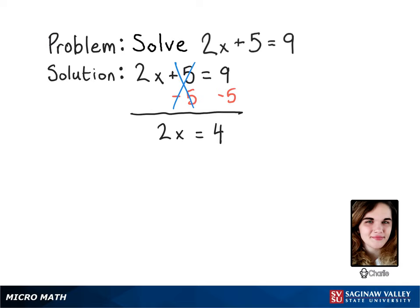All that's left to get rid of on the x side is the 2 attached to it, known as the coefficient. Now coefficients are always multiplying into their variables, so this is like saying 2 times x. In order to cancel multiplication, we have to divide. So I'm going to divide both sides of the equal sign by 2.